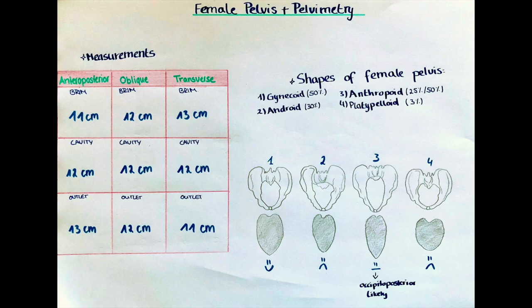Hello and welcome to this channel. My name is Victoria and today we are going to talk about the female pelvis, its role in giving birth, as well as how we determine its diameter and size and also the different types of shape that we can observe and how that influences birth.